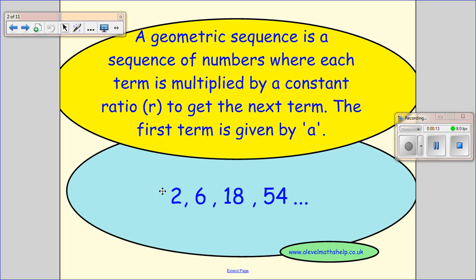So in this example here, we have 2 which we multiply by 3 to get 6, 6 we multiply by 3 to get 18, 18 we multiply by 3 to get 54 and so on. So the constant ratio is 3 and the first term is given by a and a would equal 2.